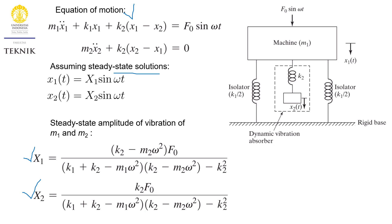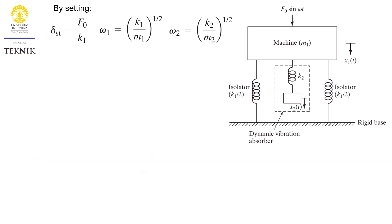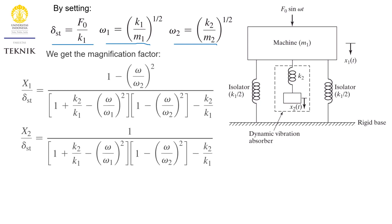As engineers, we are always interested in normalizing equations to make them non-dimensional so that the equations can apply to many other conditions. By setting these three parameters — the static deflection and the natural frequencies omega1 and omega2 — and rearranging the previous equations, we arrive at two equations for the so-called magnification factor: capital X1 divided by static deflection, and capital X2 divided by static deflection.